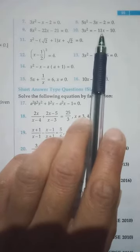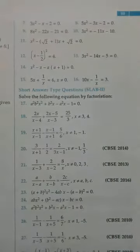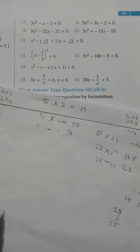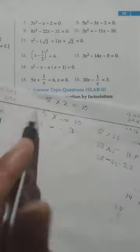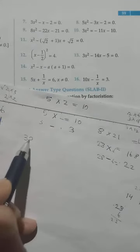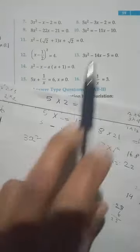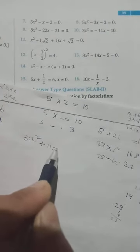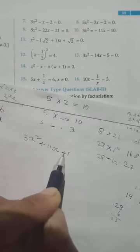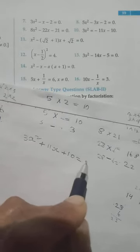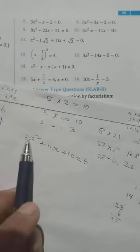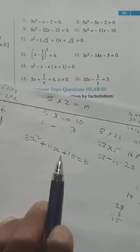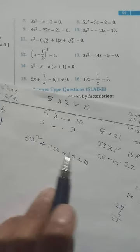Let's transfer everything to the same side. We can write it as 3x squared — if we take the minus terms to this side, minus becomes plus, and minus 10 becomes plus 10. Now we have the form ax squared plus bx plus c, so we have to solve by splitting the middle term.